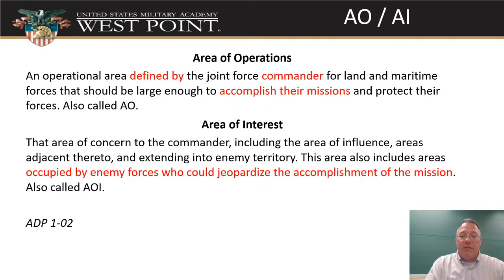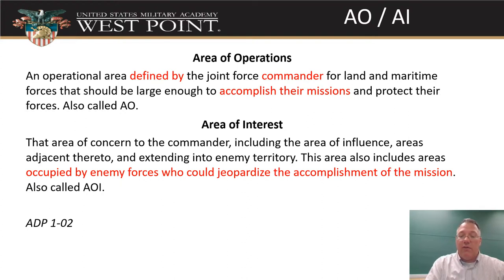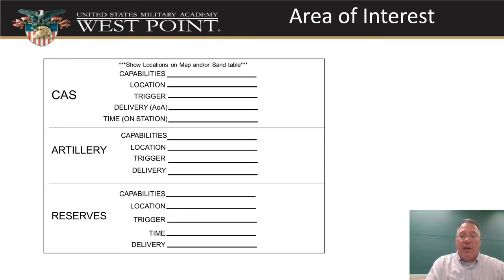Understand the difference between area of operations and area of interest. The area of operations is defined by the commander — it's where you accomplish your mission. The area of interest is all the area where the enemy could jeopardize your mission, which might be outside your AO. For example, a mortar in an adjacent platoon's AO that has range on you is part of your area of interest. When you analyze the area of interest, look for close air support, artillery, and reserves — their capabilities, location, trigger conditions, response time, and volume of fire.